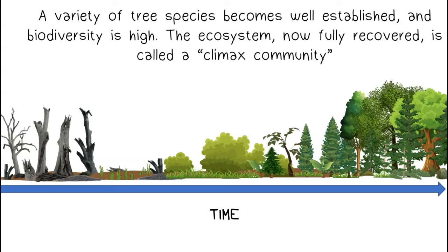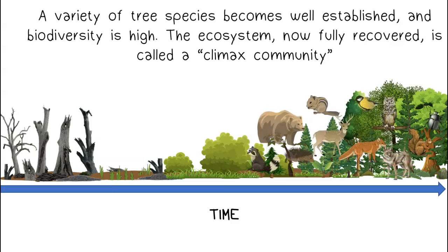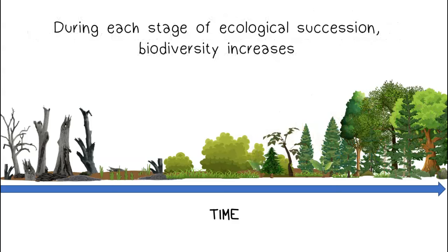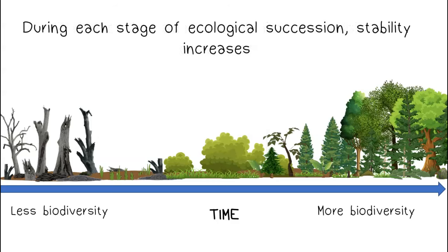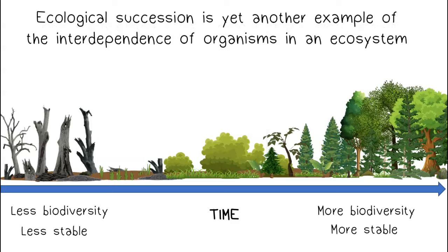The ecosystem, now fully recovered, is called a climax community. During each stage of ecological succession, biodiversity increases and stability increases. Ecological succession is yet another example of the interdependence of organisms in an ecosystem.